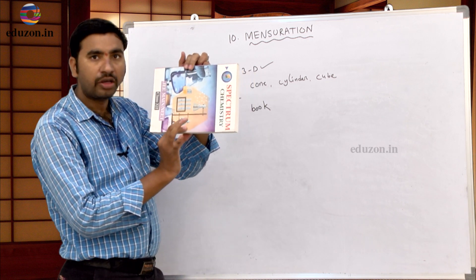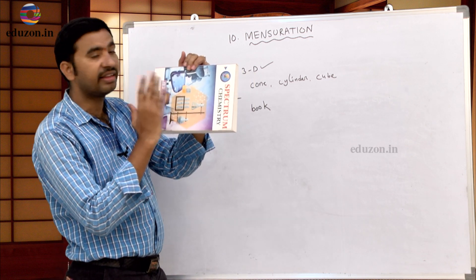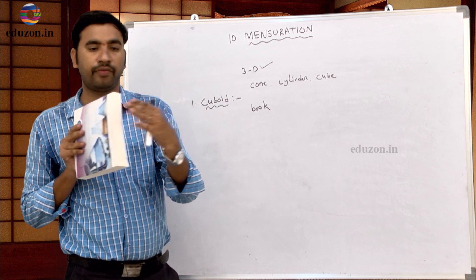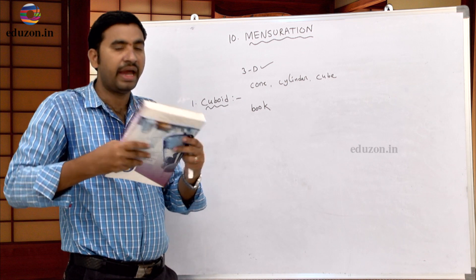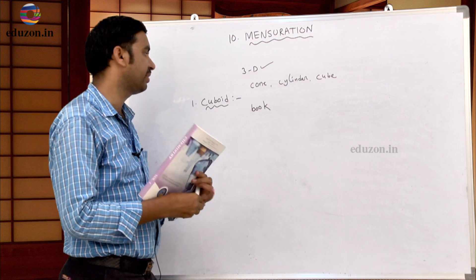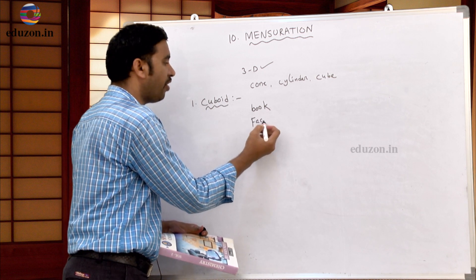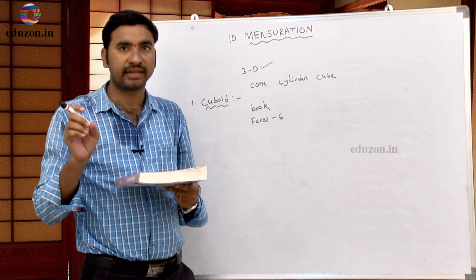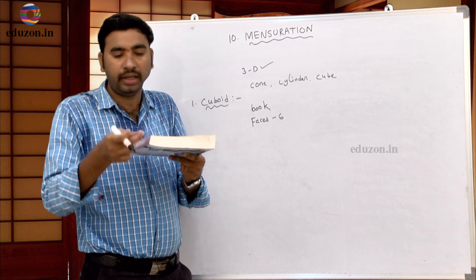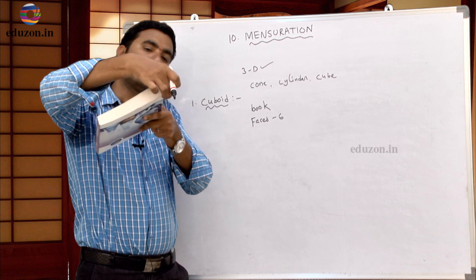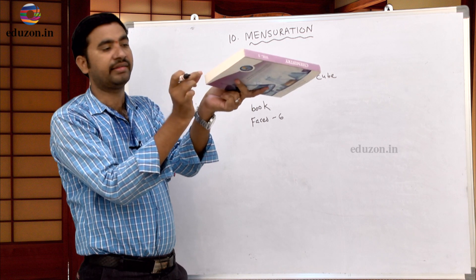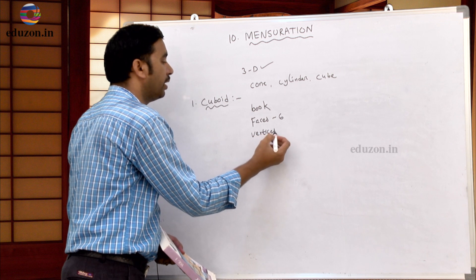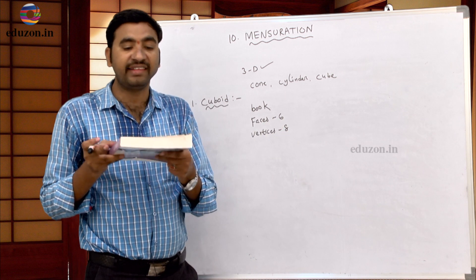Now see here — every cuboid has 6 faces: 1, 2, 3, 4, 5, and 6. So the number of faces is 6. Now what about vertices? Vertices means corners. A cuboid has 8 vertices: 1, 2, 3, 4, 5, 6, 7, 8. So the number of vertices of a cuboid is 8. What about edges?